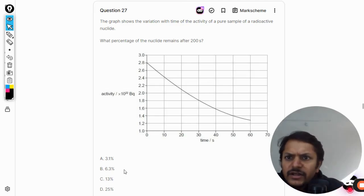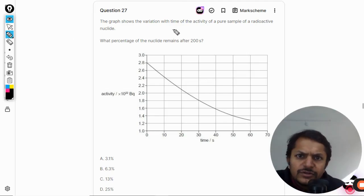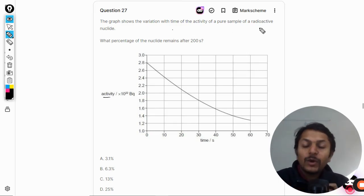Okay students, let us see what is there in this question. The graph shows the variation with time of the activity of a pure sample of radioactive nuclei. What percentage of the nuclei remains after 200 seconds? So we have to find what percentage of the nuclei remains after 200 seconds.